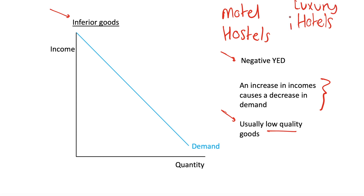So demand increases for luxury hotels and decreases for motels and hostels — an increase in incomes causes a decrease in demand. We can also think of clothing: stores like Primark, which sell low quality clothing, tend to do quite well in recessions, whereas companies like Gucci or any luxury clothing brand will not do well in a recession because demand decreases, as with many goods we think of as normal.